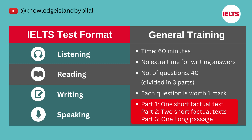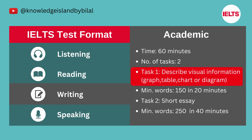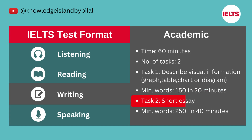In the Academic Writing test, you will have 60 minutes to attempt two tasks. Topics are of general interest suitable for test takers entering undergraduate and postgraduate studies or seeking professional registration. In Task One, test takers are asked to describe some visual information — for example, a graph, table, chart, or diagram showing a process — in their own words, writing at least 150 words in about 20 minutes. In Task Two, test takers respond to a point of view, argument, or problem in the form of an essay, writing 250 words in about 40 minutes.